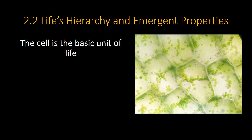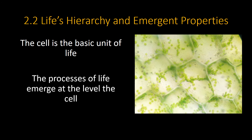One of the biggest leaps in emergent properties and complexity is the cell. The cell is very important because that is where the processes of life all emerge. Molecules are not living. Atoms are not living. But a cell is. These are Elodea cells, and you can see the little green balls in them — those are chloroplasts, tiny little organelles where photosynthesis takes place. Cells are unique; they're the level where life emerges.